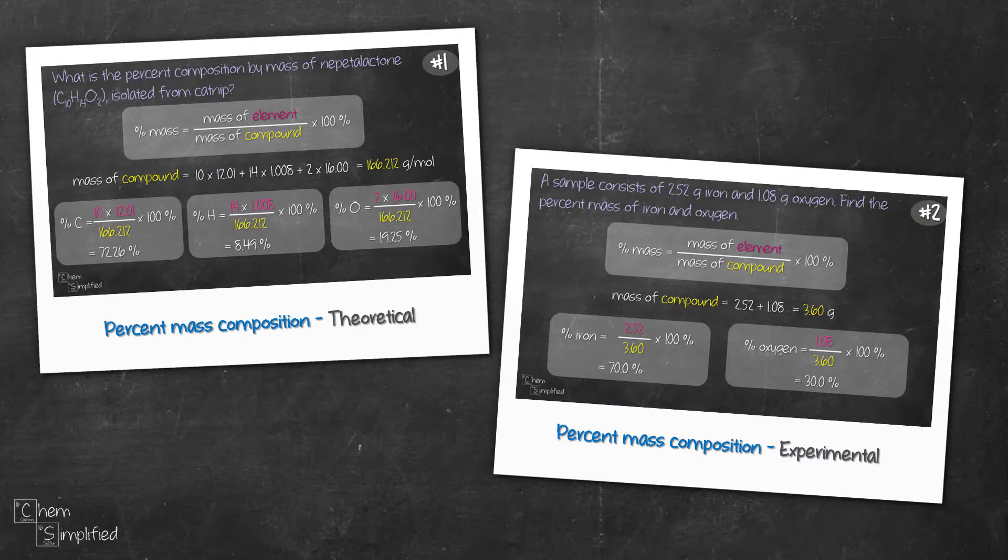To recap we've looked at two ways of calculating percent mass composition. One is through theoretical calculation, another is through experimental values.